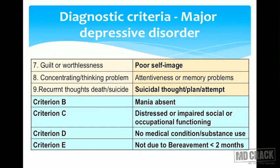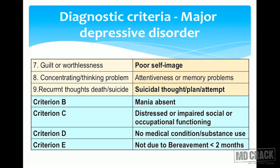Symptom number seven is a sense of guilt or worthlessness, called poor self-image. Number eight is problems in concentrating and thinking, resulting in attentiveness or memory difficulties. The last symptom, number nine, is recurrent thoughts of death, or thoughts, plans, or attempts at suicide.